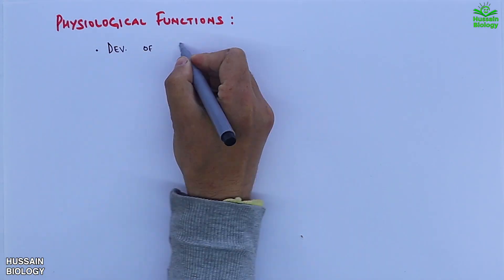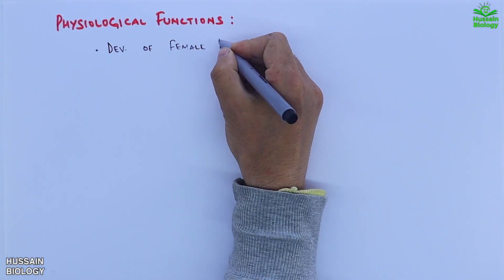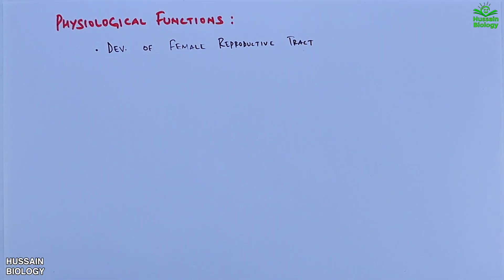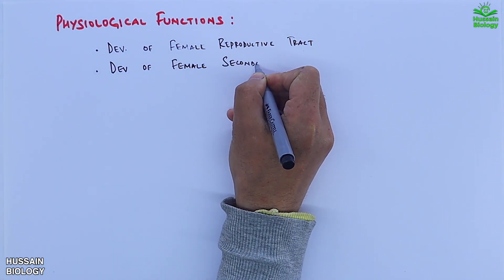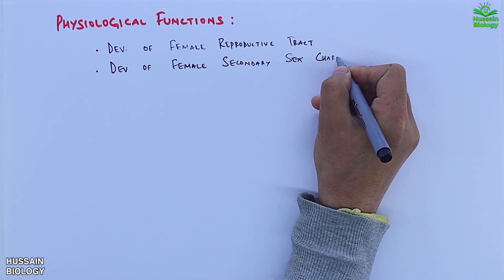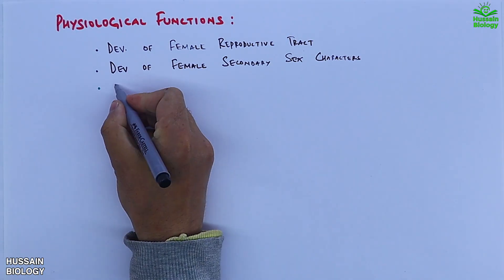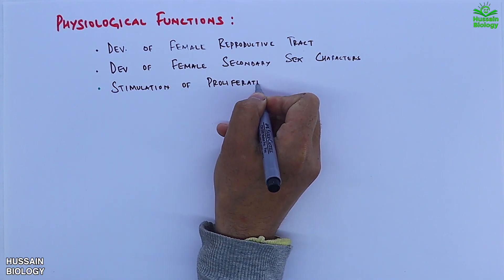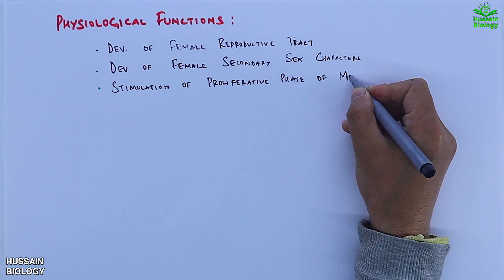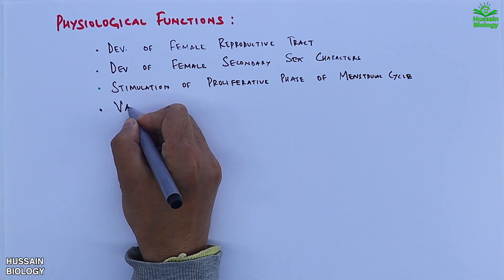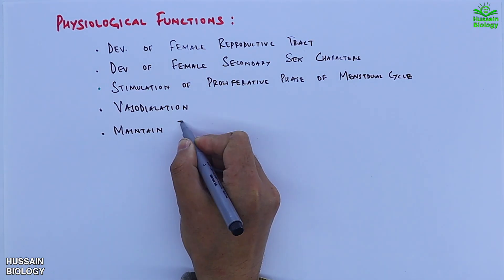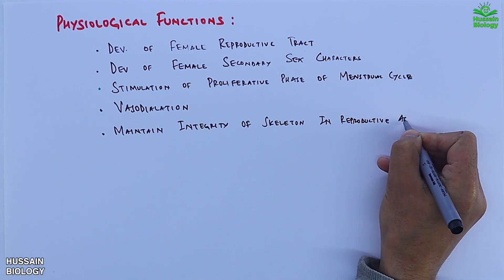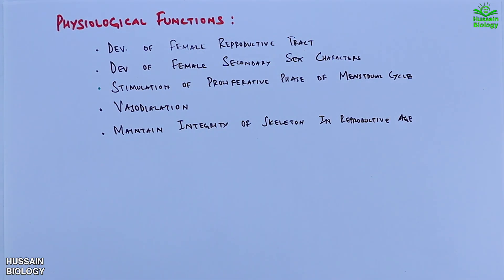The physiological functions of estrogens include: first, aiding in the development of the female reproductive tract; second, development of female secondary sexual characteristics; third, stimulation of the proliferative phase of the menstrual cycle; fourth, vasodilation; and fifth, maintaining the integrity of the skeleton during reproductive age.